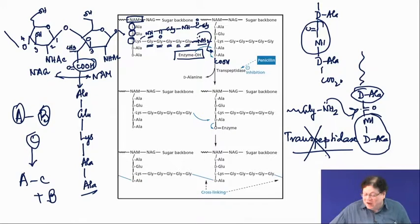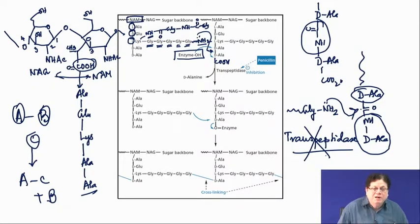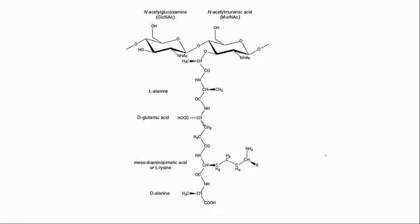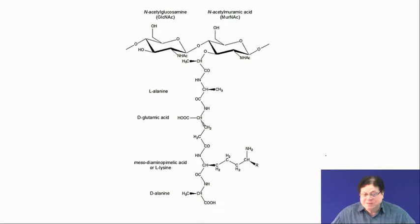Essentially, penicillin is an active-site-directed irreversible inhibitor (ASDII) of transpeptidase. It goes to the active site, attacks the enzyme, forms a covalent bond, and stays there. Water is blocked from hydrolyzing the acyl-enzyme complex. The cross-link never forms, the cell wall remains fragile, and the cell undergoes lysis.